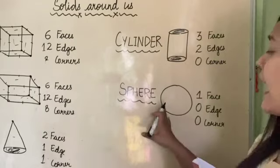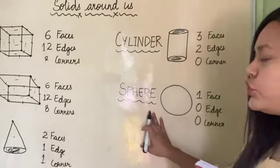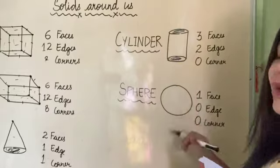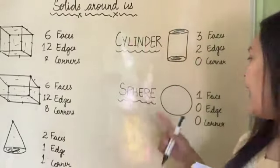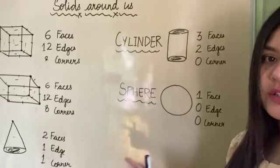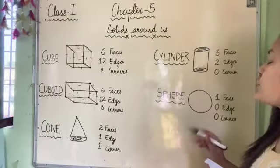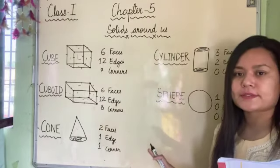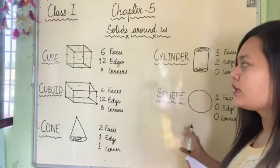The fifth solid shape is sphere. Sphere has only one face because it is round. And there are no edges and no corners - zero edges and zero corners. These are your solid shapes.